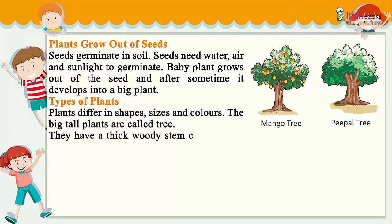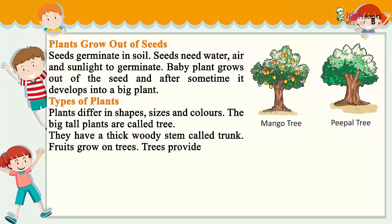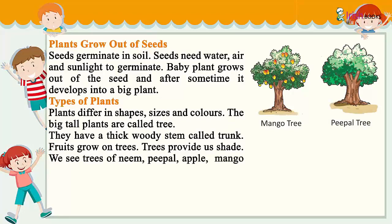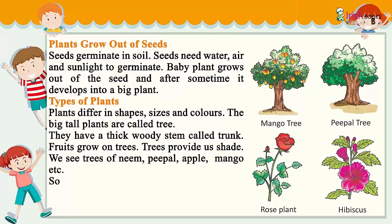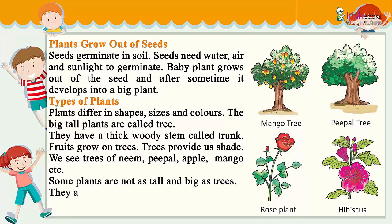Types of Plants: Plants differ in shapes, sizes, and colours. The big tall plants are called trees. They have a thick, woody stem called a trunk. Fruits grow on trees, and trees provide us shade. We see trees of neem, peepal, apple, mango, etc.